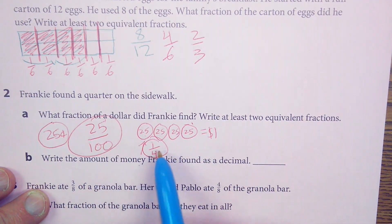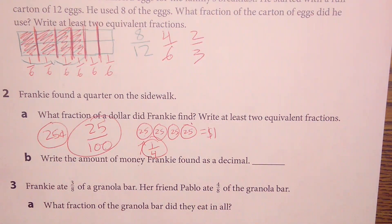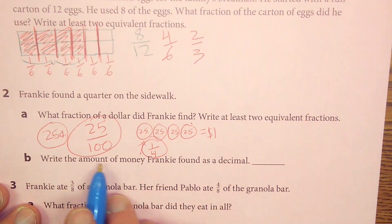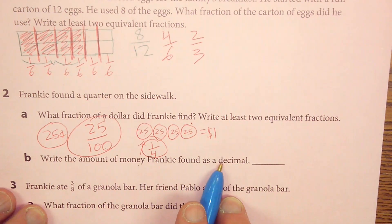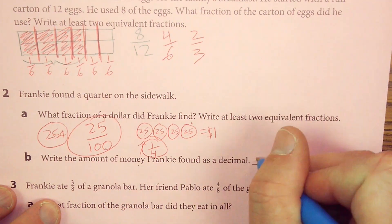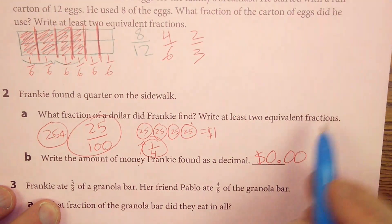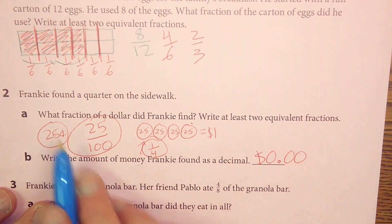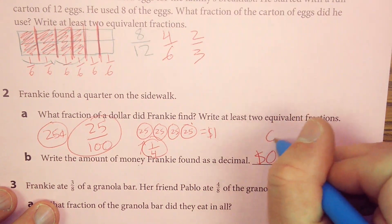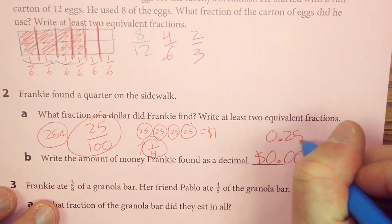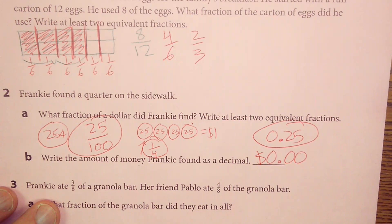And we know this is true because if I take four times twenty-five, I get one hundred. And one times twenty-five is twenty-five. So I have two fraction equivalents. Write the amount of money Frankie has found as a decimal. Well, think about dollars. If you think about however many dollars, dot, and how many cents, what would this be? What would one-quarter be? It would be zero dollars, right? And twenty-five cents. There is my decimal.